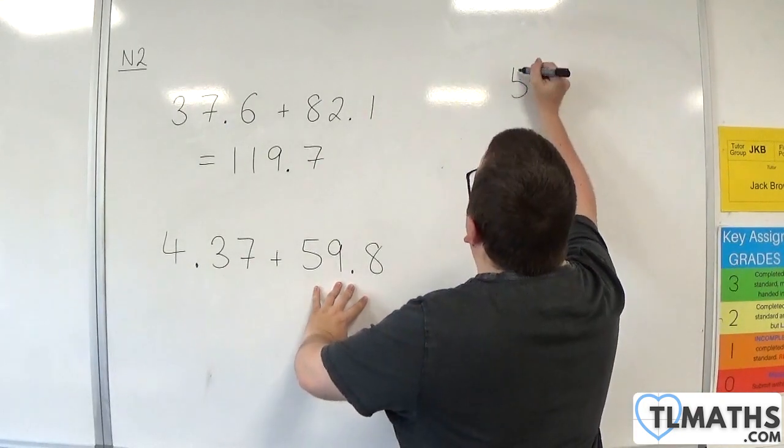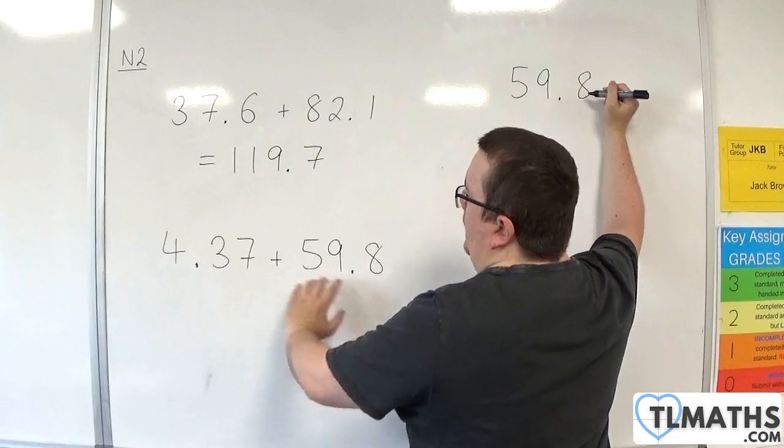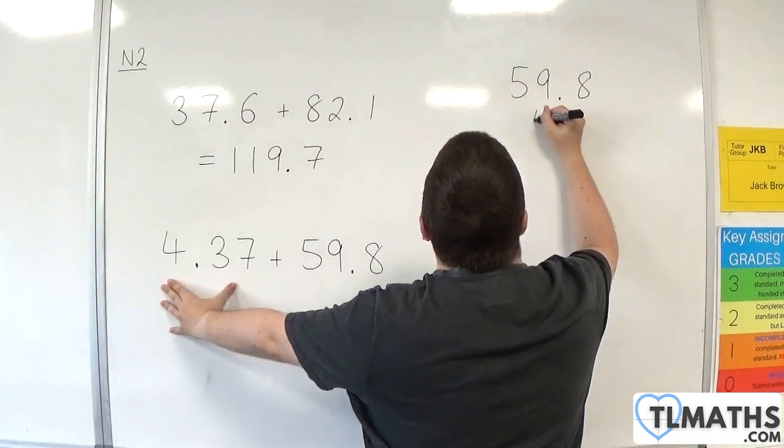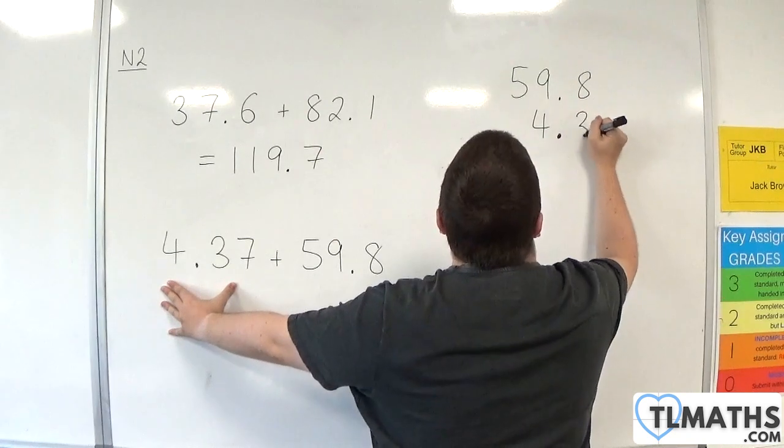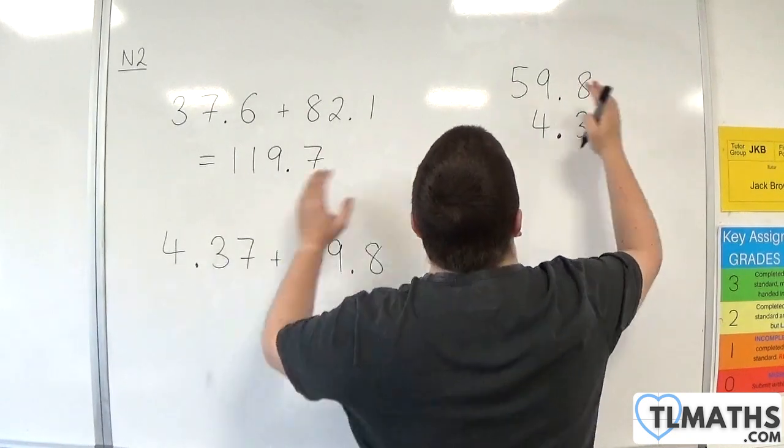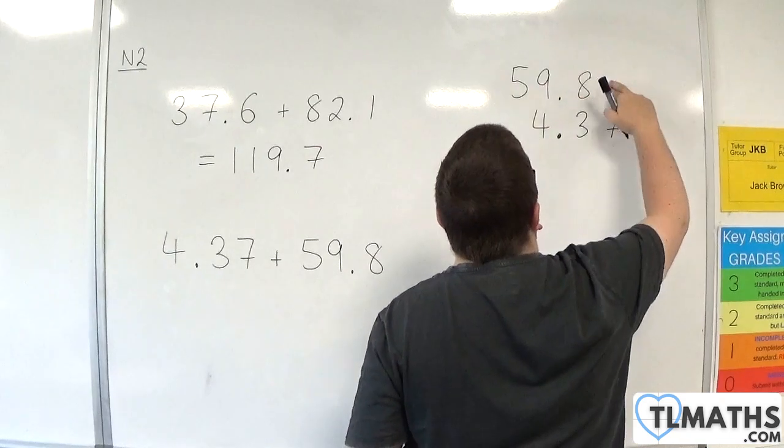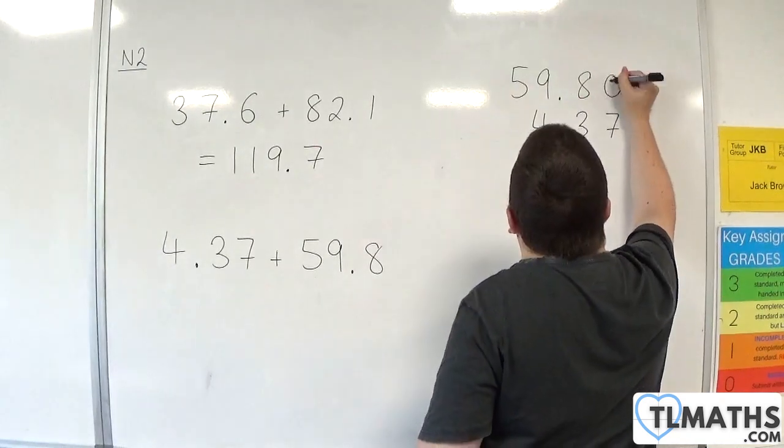I'm going to put 59.8 on the top, and then 4.37. So you need to make sure the decimal points line up. 3, 7. And then any empty space to the right that I have here, just fill it with zeros.